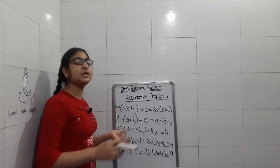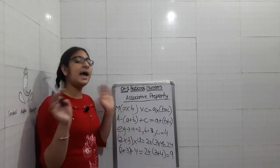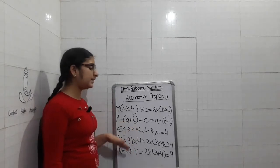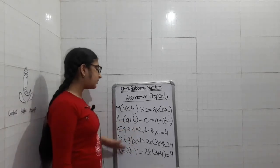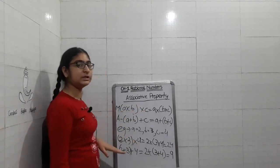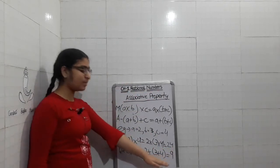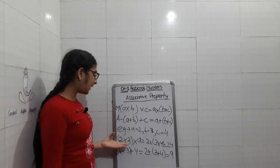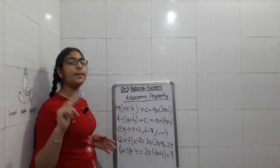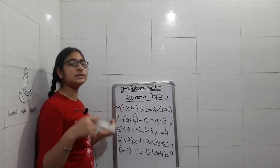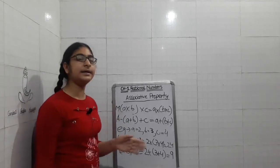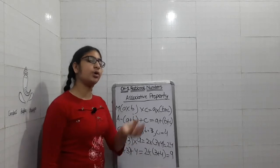Let's take values: A equals 2, B equals 3, C equals 4. For multiplication: A into B is 2 into 3 equals 6, then 6 into 4 equals 24. If instead you solve B into C first: 3 into 4 equals 12, then 2 into 12 equals 24. Both give the same answer, 24.